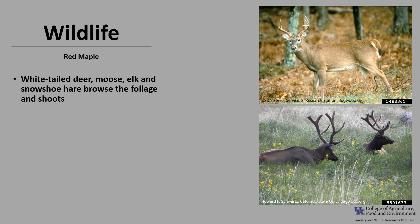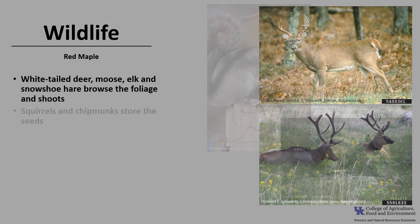Several wildlife species eat or browse the foliage and twigs of red maple, including white-tailed deer, moose, elk, and snowshoe hare. It can be especially valuable to white-tailed deer during the late fall and winter. The seeds, buds, and flowers are also eaten by various wildlife species.